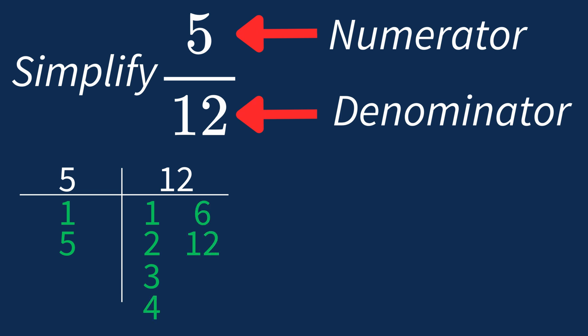So in this case, the largest common factor is 1. This means we'll divide both the numerator and denominator by 1 to see if anything changes.